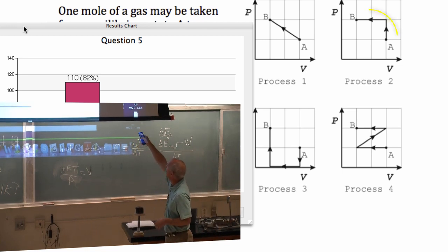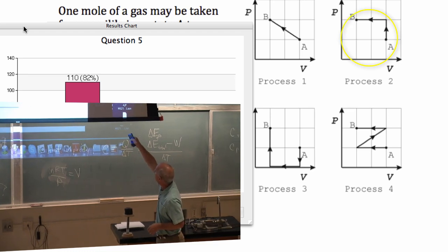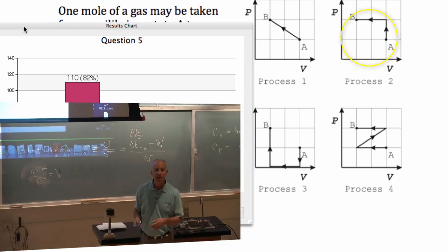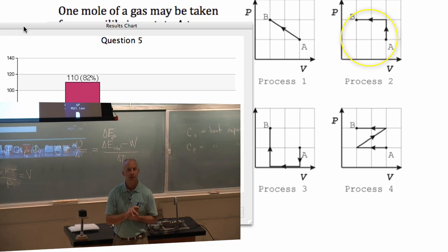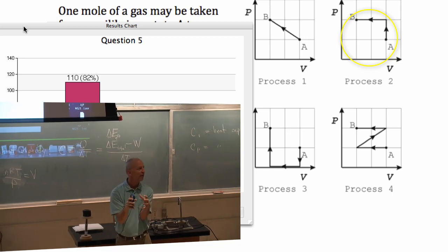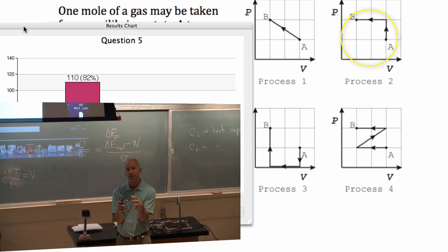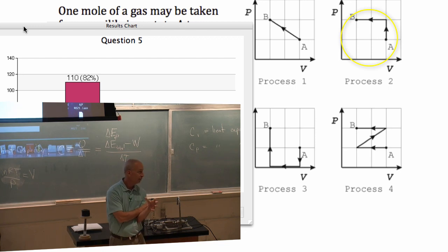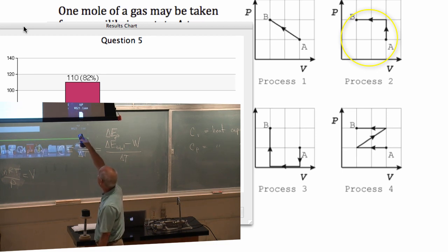For instance, let's say we start at A and we want at constant volume to raise the pressure. What do you do to that? If you want to raise the pressure of a gas without changing the volume, how do you do that? We talked about this and somebody actually answered it really quickly before. Heat it up. Add heat. This is adding heat.